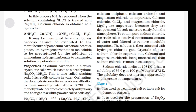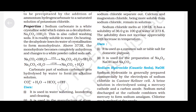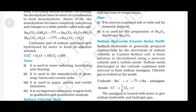Sodium chloride melts at 1081 K. It has a solubility of 36 g per 100 g of water at 273 K. The solubility does not increase appreciably with increase in temperature. Uses: it is used as common/table salt for domestic purposes and for preparation of Na₂O₂, NaOH and Na₂CO₃.